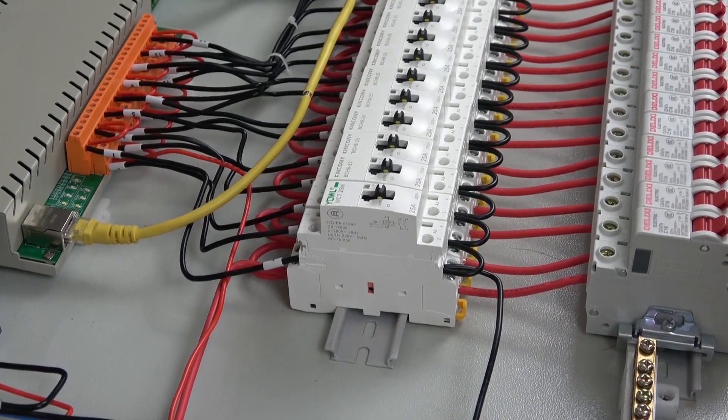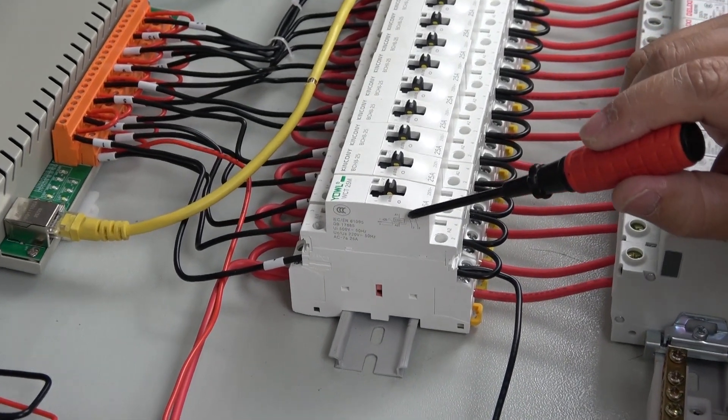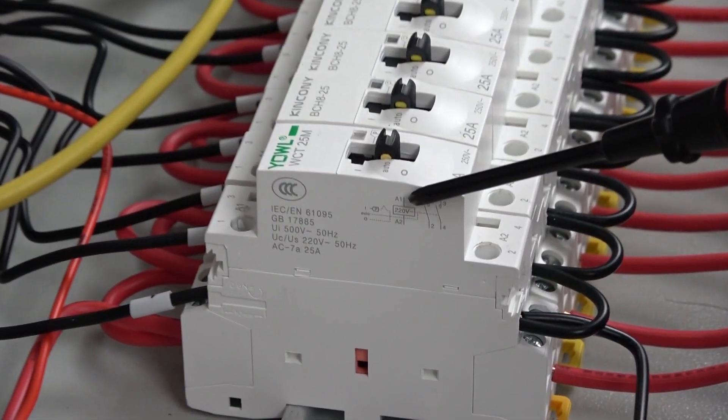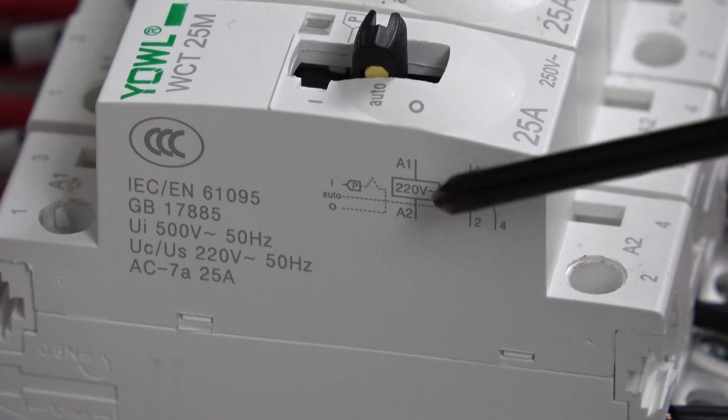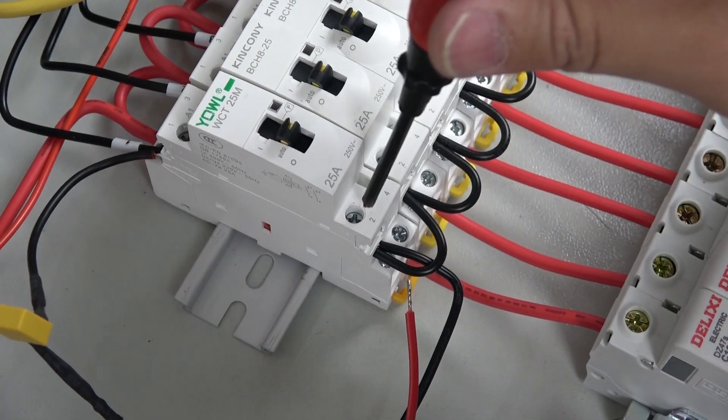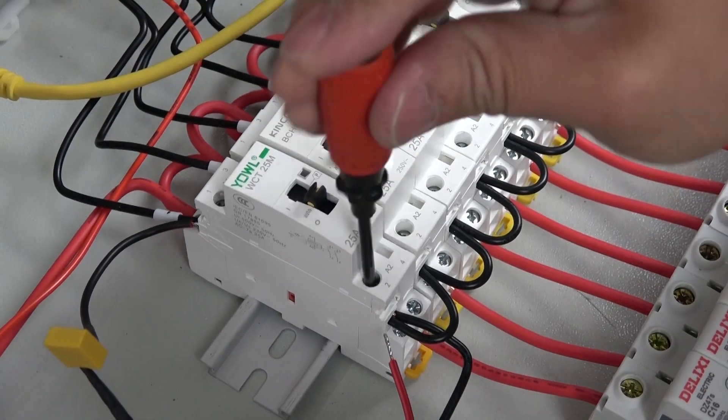Now we can add it to the AC contactor. You can see the contactor - these are A1 and A2. A1 and A2 are the coil's two points. A2 is the neutral line.